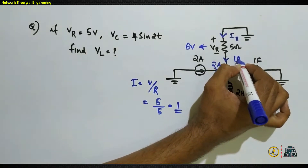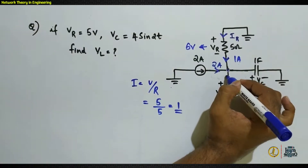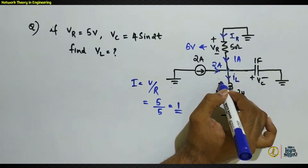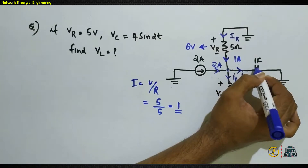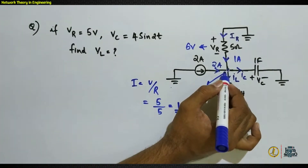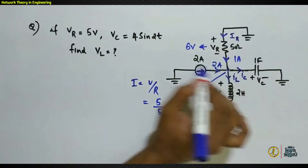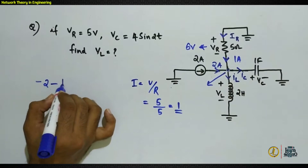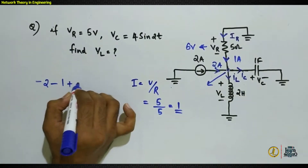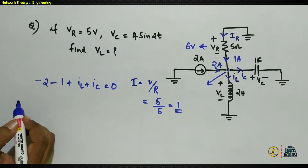There are two more currents in this circuit: IL flowing through the inductor and IC flowing through the capacitor, with directions based on the given polarities. Applying KCL at the node, the algebraic sum of leaving currents equals zero. The 2-ampere source enters (−2) and the 1-ampere resistor current enters (−1), while IL and IC are already taken as leaving, giving: −2 − 1 + IC + IL = 0.